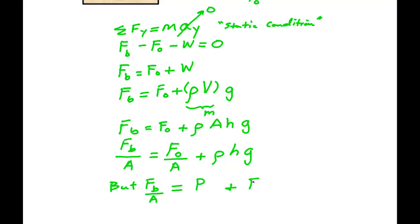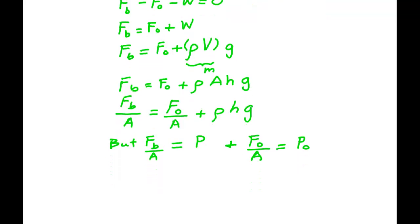But the force on the bottom divided by the area is the pressure at the bottom, which we're calling P. And the force on top divided by the area is the pressure on the top, which we're calling P naught. Substituting this in, we have that P is P naught plus rho HG or rho GH, either way you want to write it.